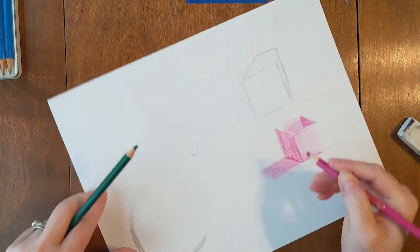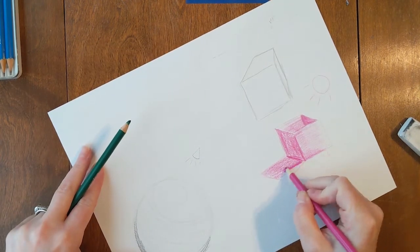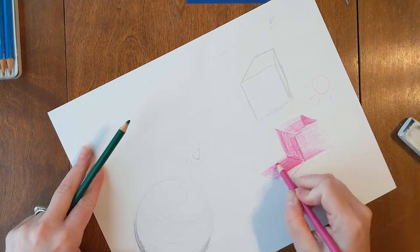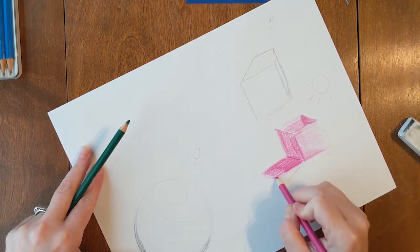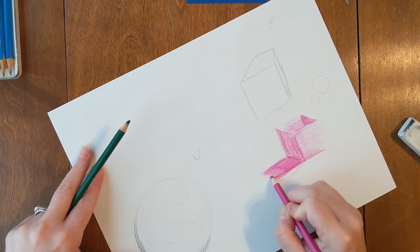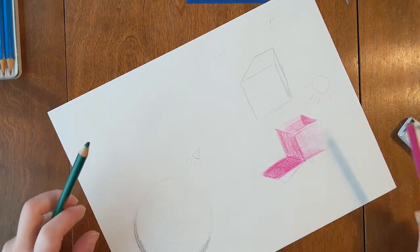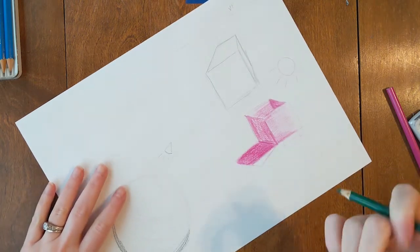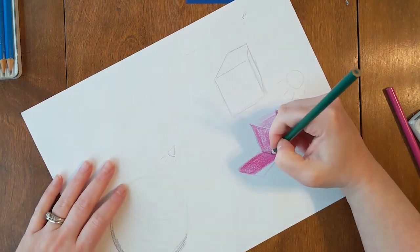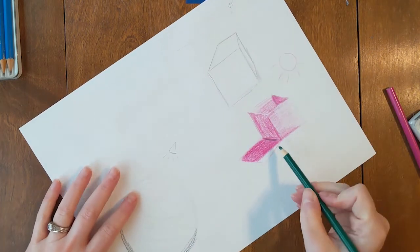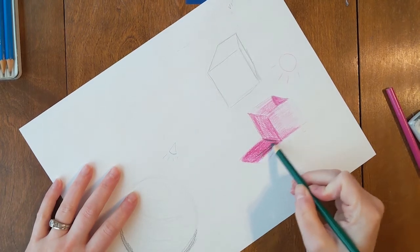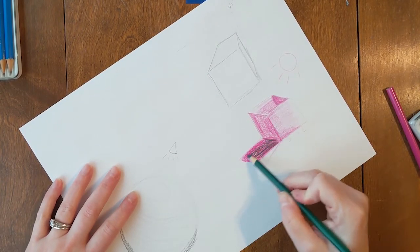So I start off lightly just in case I make a mistake. And then I take my pencil and I come back through and make it nice and dark. And because it's a shadow, I'm not going to worry about making it any kind of variation in color. I'm just going to make it nice and solid. And now I'm going to take that green pencil and again, making that edge kind of nice and crispy and coming through with my green.